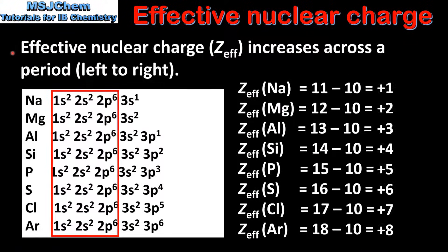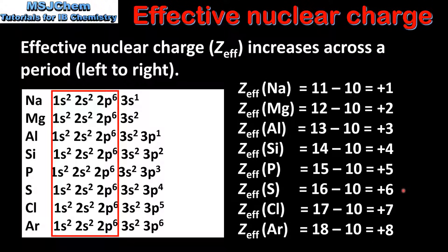The effective nuclear charge increases across a period from left to right. Here we have the electron configurations of the elements in period 3 from sodium to argon. If we calculate the effective nuclear charge for each element we can see that as we go across a period it increases by 1 until it reaches its maximum for the group 18 element argon. This increase in effective nuclear charge is one of the reasons why the ionization energy increases across a period from left to right.